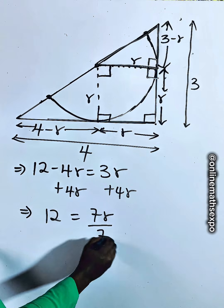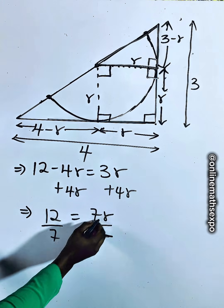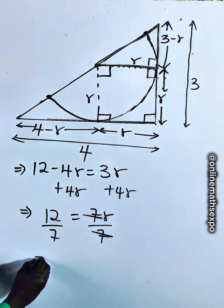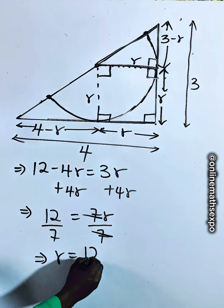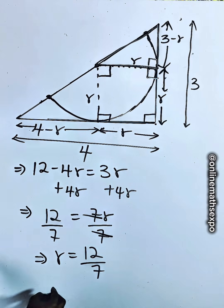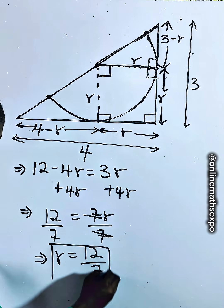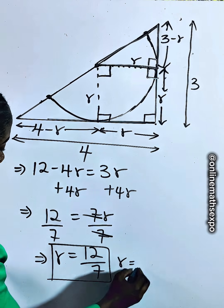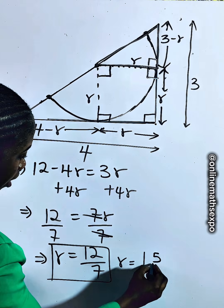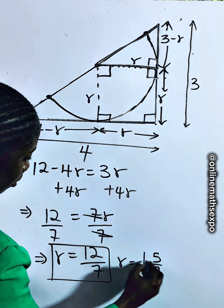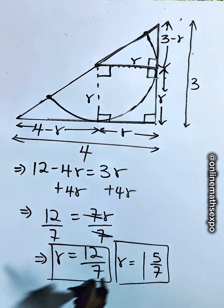To get R, we divide both sides by the coefficient 7. So R is equal to 12 divided by 7. You can also write it as 1 and 5 sevenths. This gives us the value of R — you can go with either form.